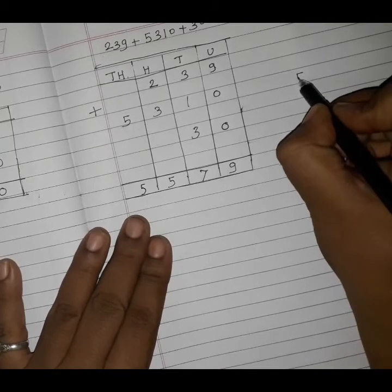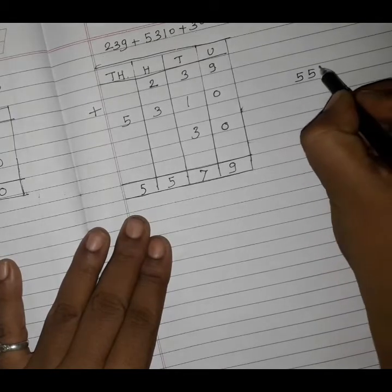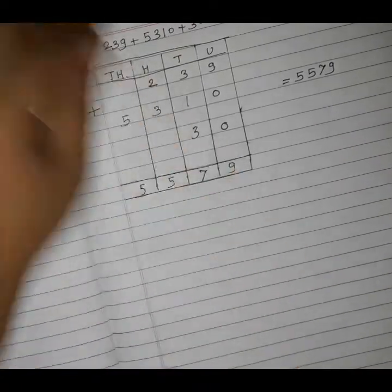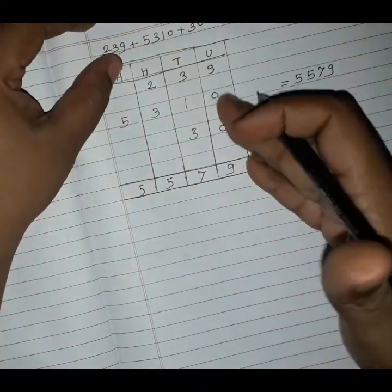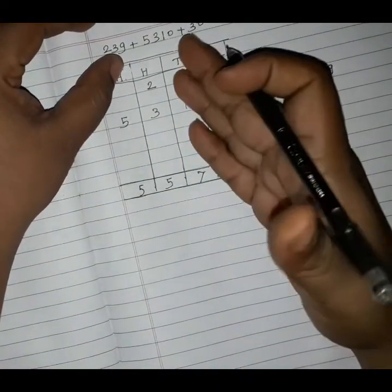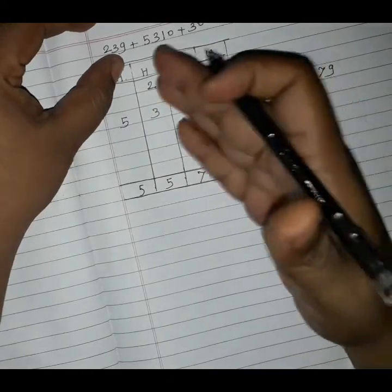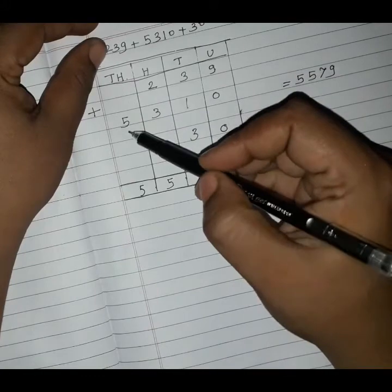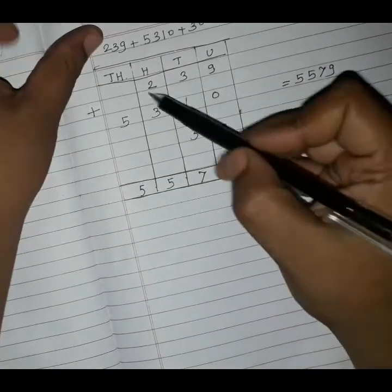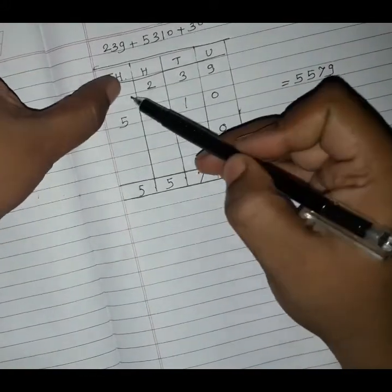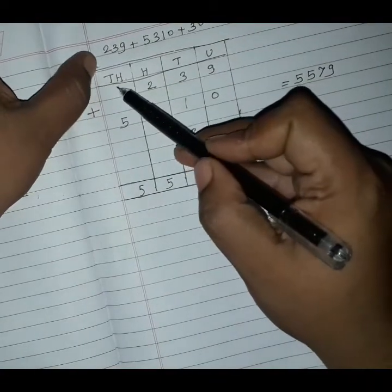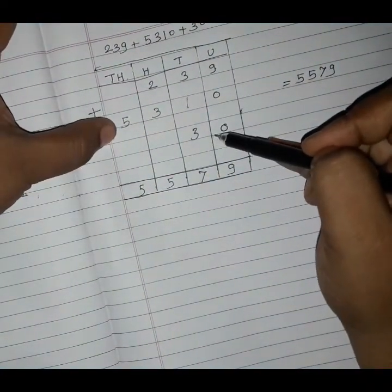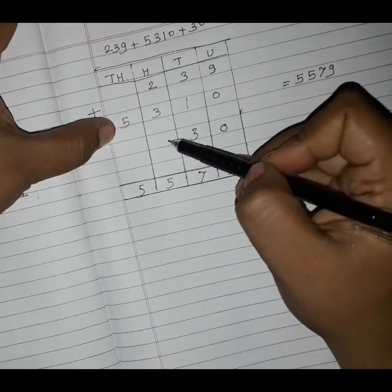At thousands place 5, so the answer is 5579. You have to write units under units, tens under tens, hundreds under hundreds, and thousands under thousands. Here is no hundreds in the first number, so this place is empty. In the third number there is no thousands and no hundreds, so this place is also empty.